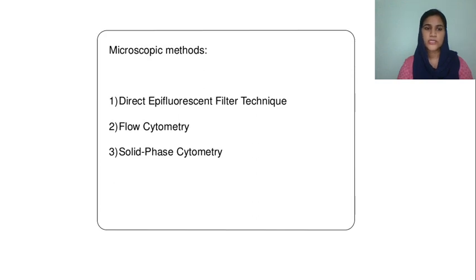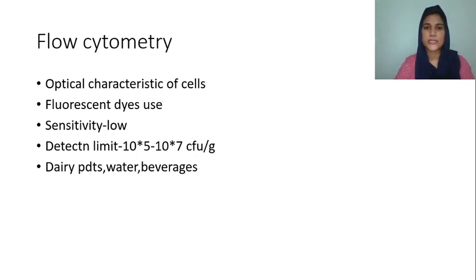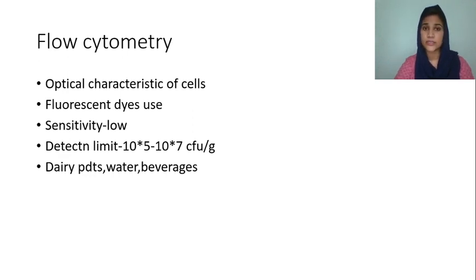The second method is flow cytometry, and the third one is solid phase cytometry. Flow cytometry generally uses optical characteristics and fluorescent dyes. The sensitivity is low, and the detection limit is 10 to the power of 5 to 10 to the power of 7 CFU per gram — that is colony forming units.